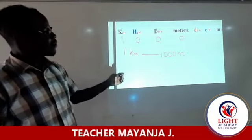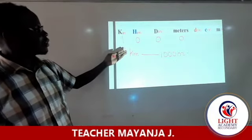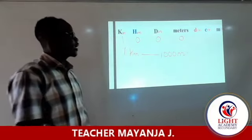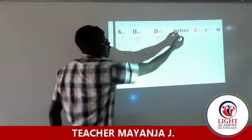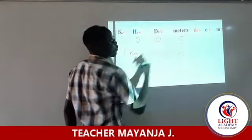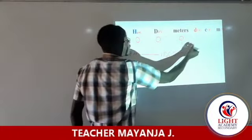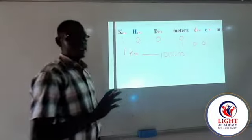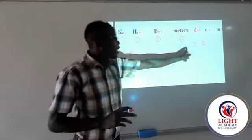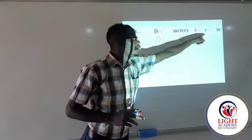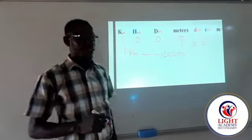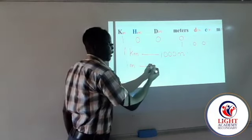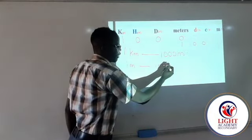You can also find out how many centimeters are in 1 meter. You just come to where you see meters, write a 1 there, and then it is 0, 0. This tells you that there are actually 100 centimeters in 1 meter.